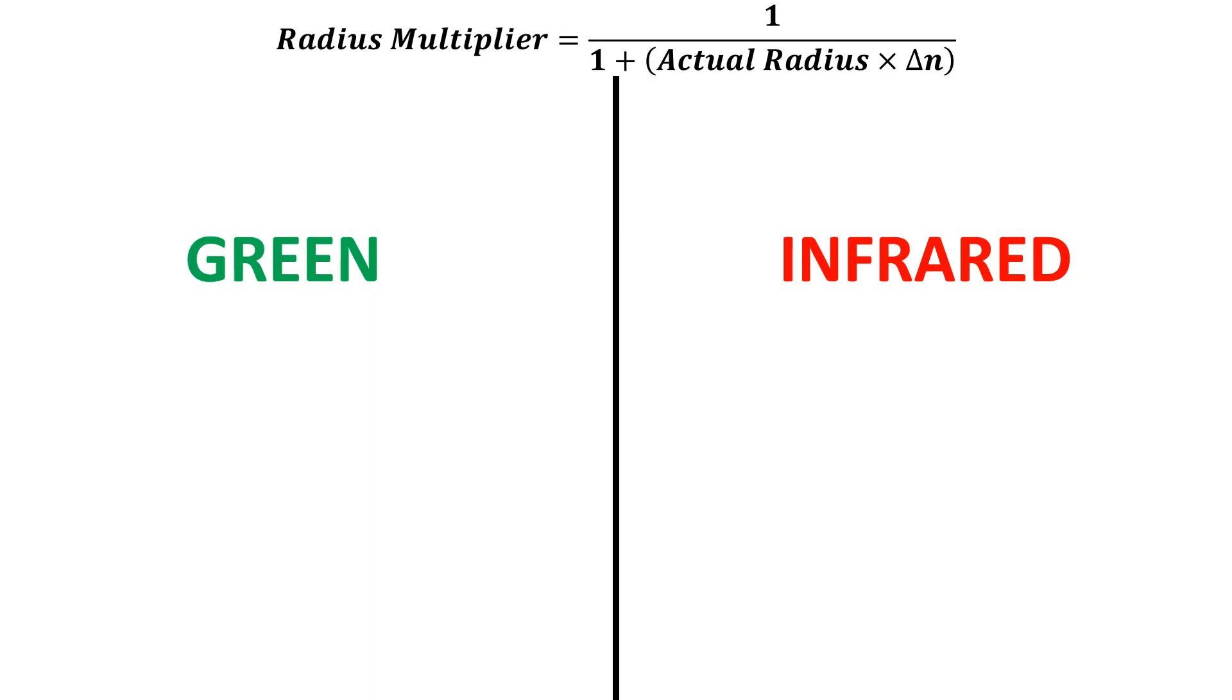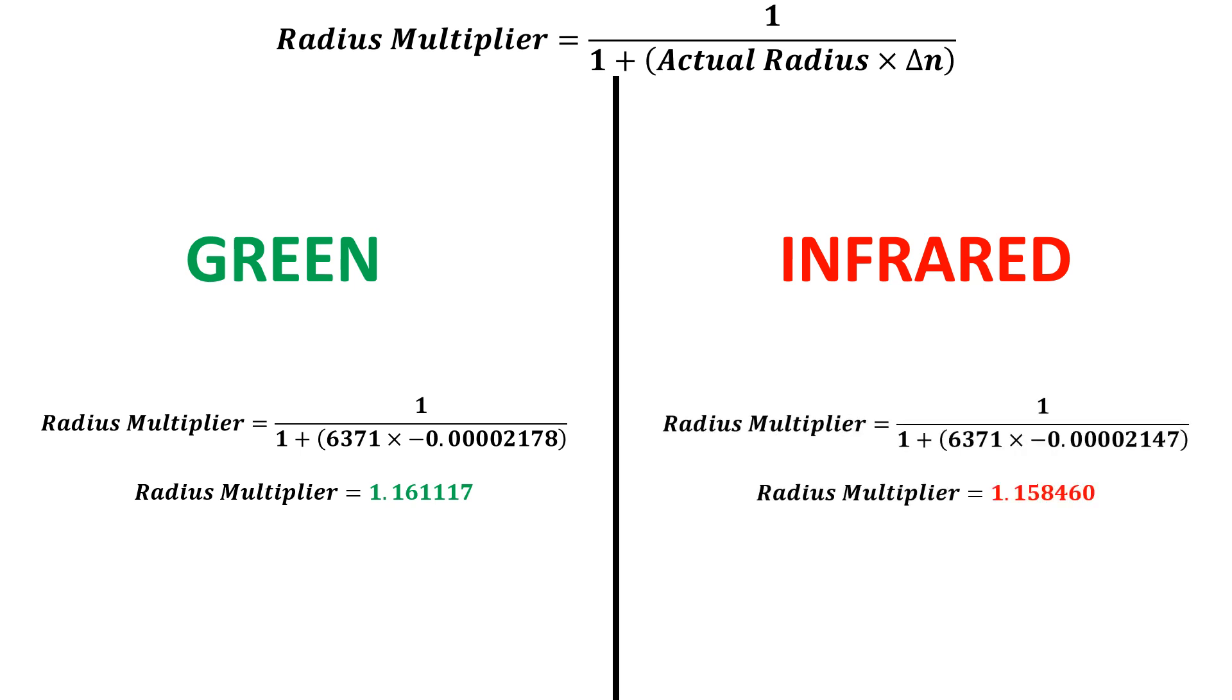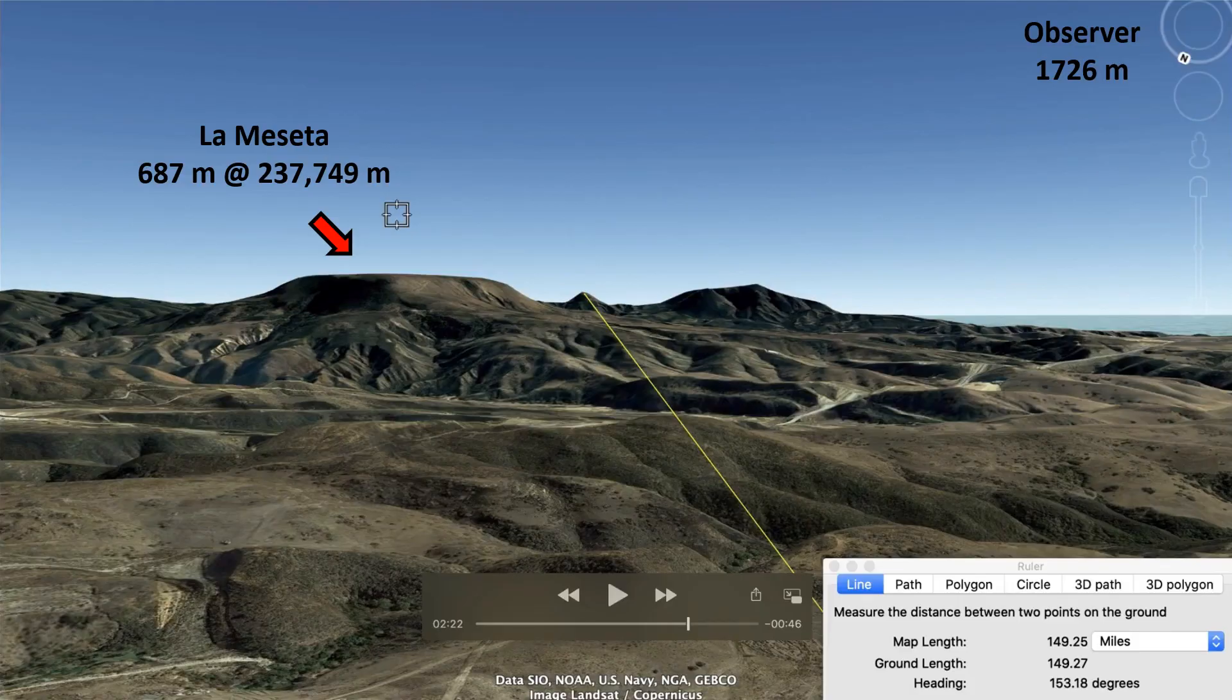So anyway, now we're going to take those gradients that we just calculated and convert them into radius multipliers that we can then use in the curve calculator. And the formula for doing that is at the top. So for green, we get a radius multiplier of 1.161117. And for infrared, we get a multiplier of 1.158460.